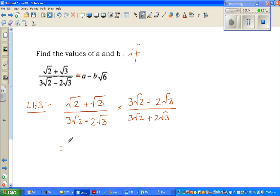So now you have to do a bit of algebra. That is, root 2 plus root 3 times 3 root 2 plus 2 root 3 over this whole thing, which is 3 root 2 minus 2 root 3 times 3 root 2 plus 2 root 3.